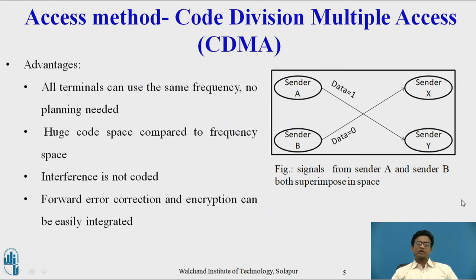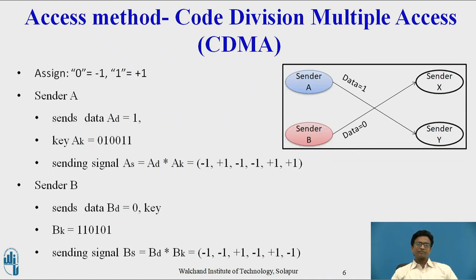As an example, we have two senders: sender A and sender B. Sender A is sending data equal to 1, and sender B is sending data equal to 0. Both signals get superimposed in the space. To identify the data from A and data from B, we require a unique code — that is a pseudorandom number. CDMA assigns orthogonal key sequence AK equal to 010011 to sender A, and BK equal to 110101 to sender B.